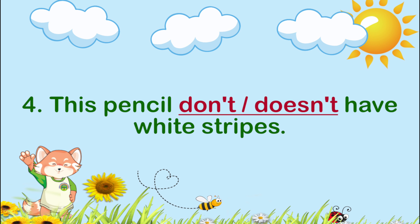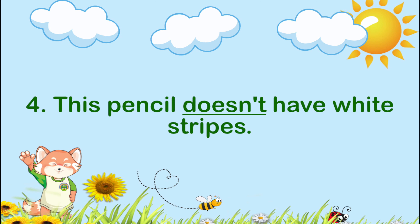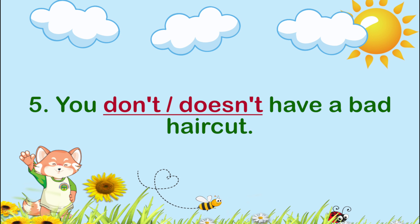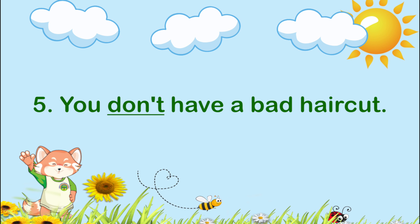Number four: This pencil ___ white stripes. The answer is doesn't have. This pencil doesn't have white stripes. Number five: You ___ a bad haircut. The answer is don't have. You don't have a bad haircut.